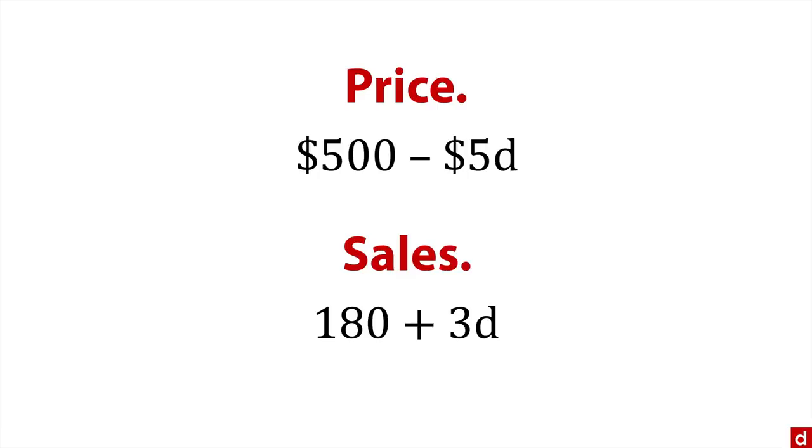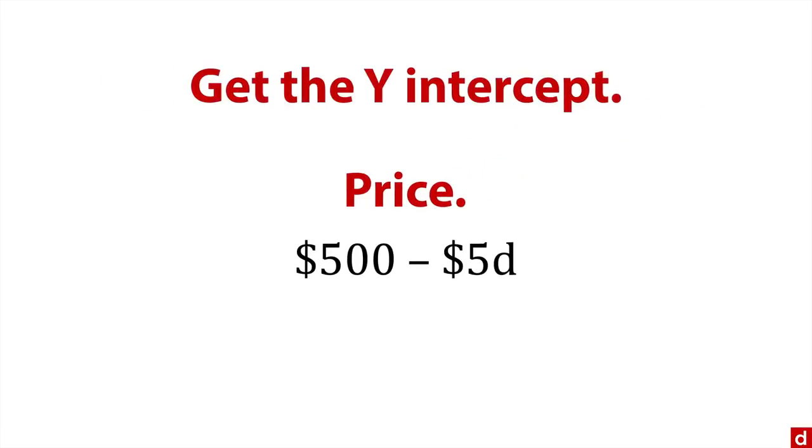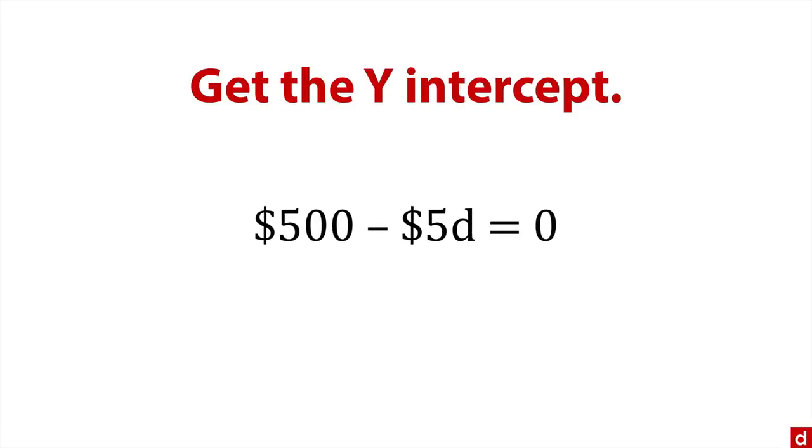What we're going to do is find sales as a function of price. To do that, first we have to get the y-intercept. We have price $500 minus $5 times D, and we solve when this equals zero. We take the 500, subtract it from both sides, and get minus 5D equals minus 500. Divide both sides by minus five, and we're left with D equals 100. When D equals 100, x is zero.